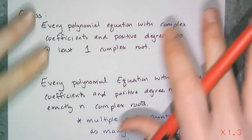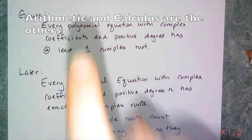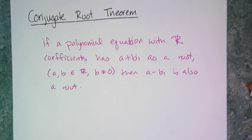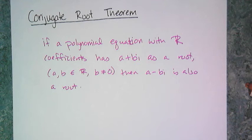You may have noticed that these polynomial theorems seem obvious — we've been taking them for granted all through learning algebra. But they're actually quite difficult to prove, and we don't prove them in Algebra 2. You probably won't prove them until you take something like algebraic structures in college.